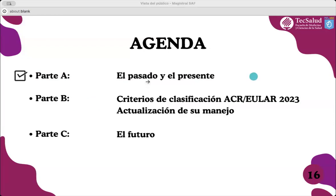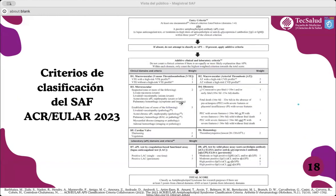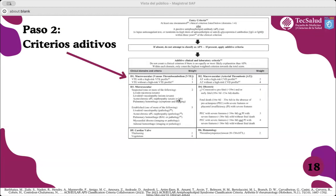Ahora vamos a hablar de los nuevos criterios de clasificación del Colegio Americano de Reumatología y la Alianza Europea. Un punto muy importante: estos son criterios de clasificación para investigación. El objetivo es capturar una muestra de estudio bien definida que represente la mayor cantidad de características de la enfermedad. Los criterios son de clasificación, no son de diagnóstico, son de investigación, y no deben tener un impacto en el tratamiento. El sistema de clasificación comienza con un criterio de entrada donde se requiere un criterio clínico documentado en dominios del 1 al 6 con un criterio antifosfolípido positivo.